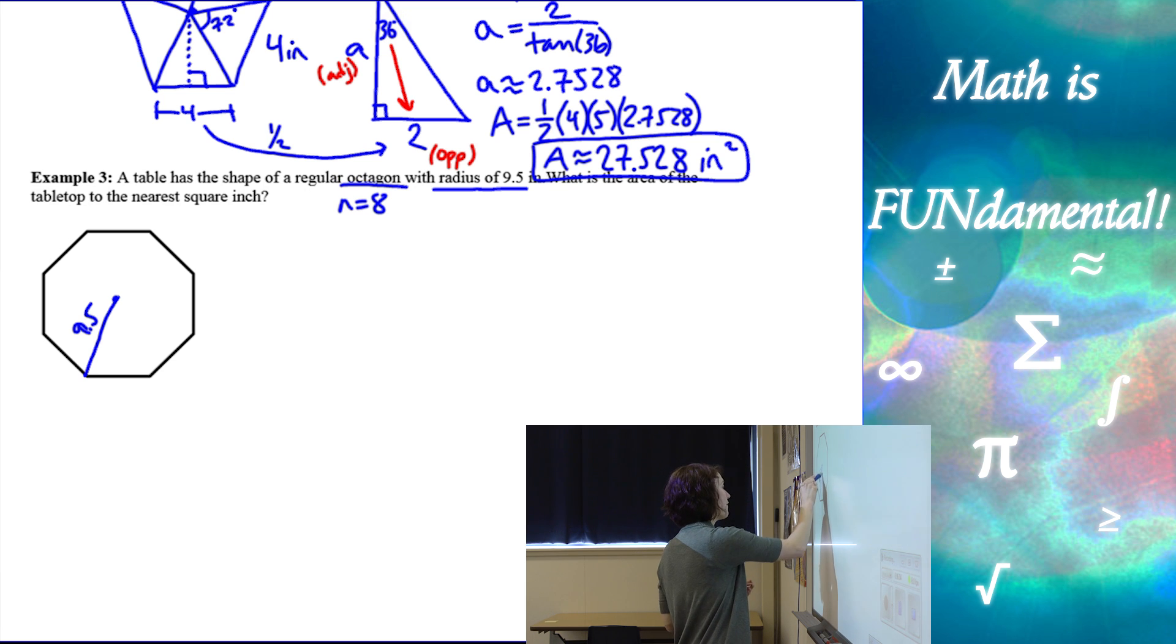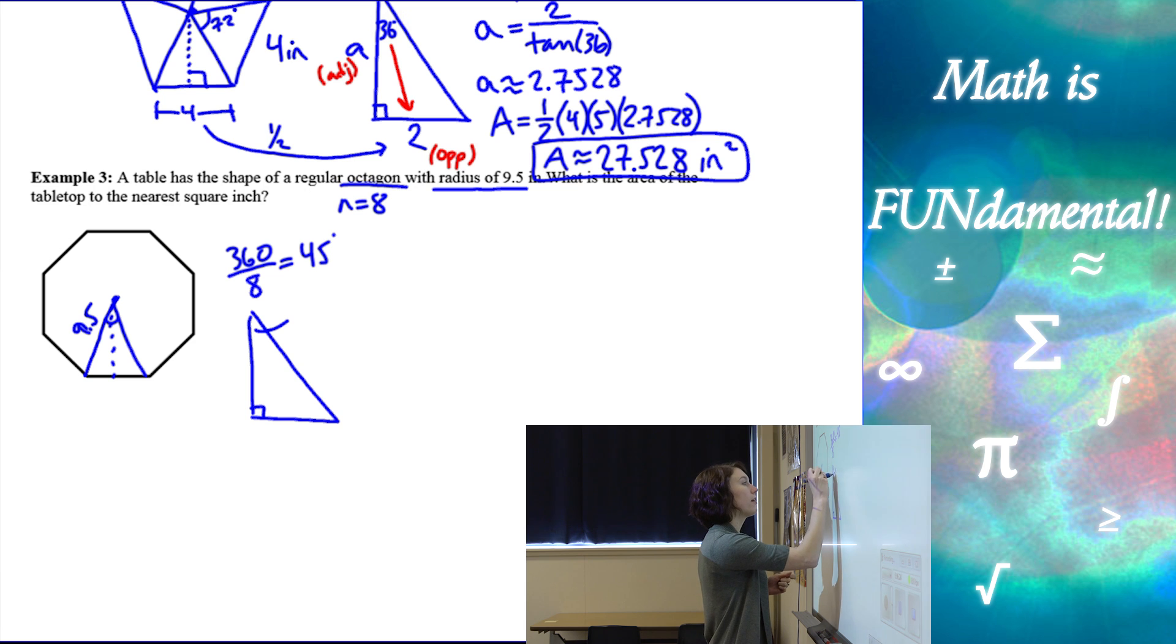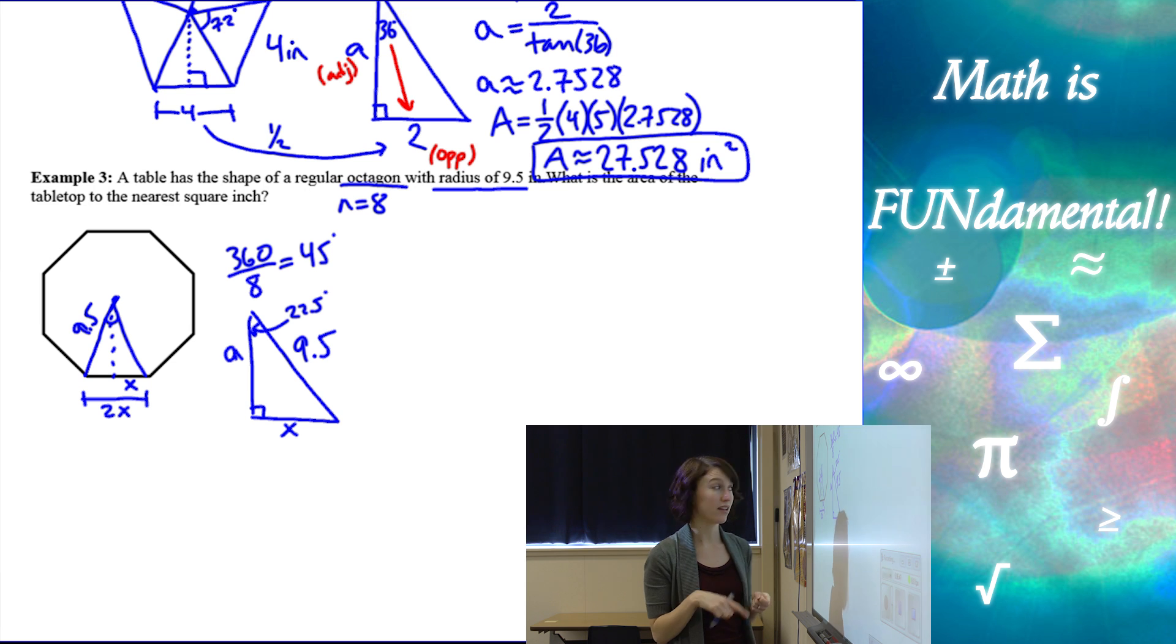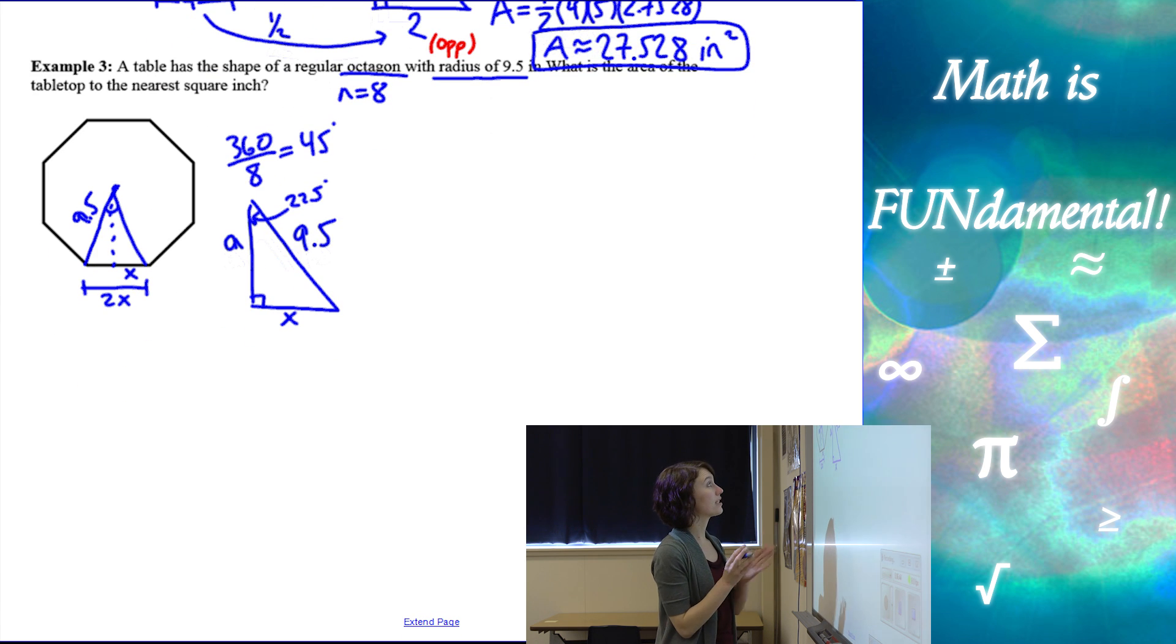Alright, so let's start by finding our angle. So same first step as it was in the last problem. 360 divided by 8, the number of sides, gives me 45 degrees. Then I'm going to need to split that angle in half to talk about my right triangle. So if I split 45 in half, I end up with 22.5 degrees in that angle. I know that my hypotenuse here is 9.5. I need to find my apothem. I'm going to name this part x. My side length is going to be 2x, so I'm going to have to double that in a little bit.